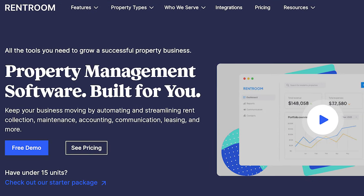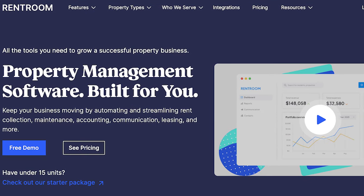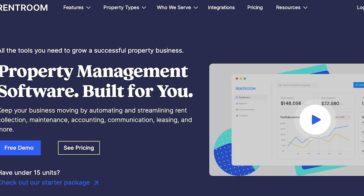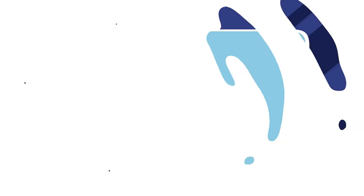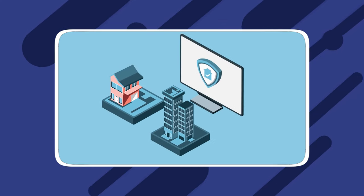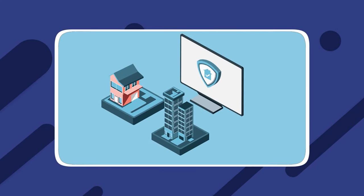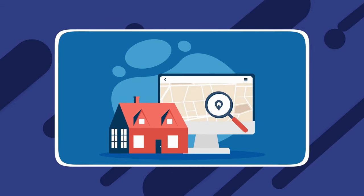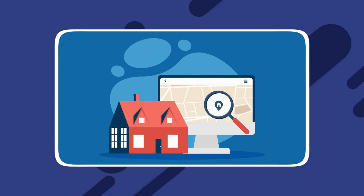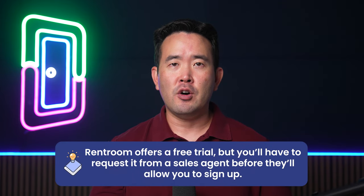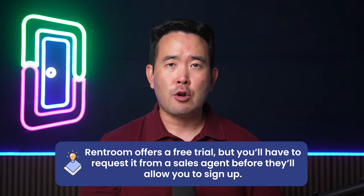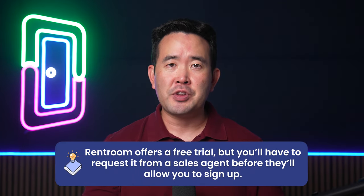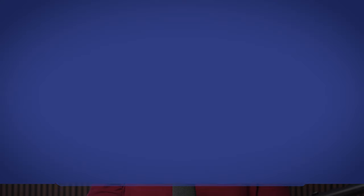RentRoom has some nice accounting tools and unique community management features for mobile homes. RentRoom also integrates with other software services and automatically syndicates your listings for rental platforms like Zillow and Apartments.com. It also lets you screen potential tenants. RentRoom offers a free trial, but you'll have to request it from a sales agent before they'll allow you to sign up.